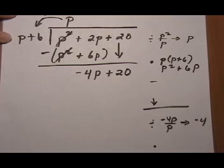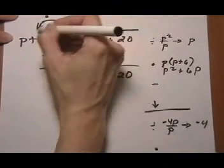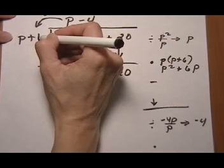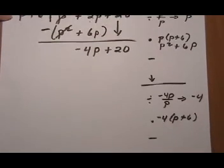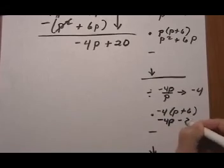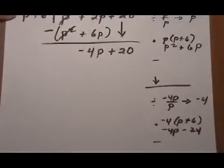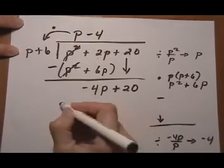So we take that minus 4, put it on top. And then we take the minus 4 and multiply it times p plus 6. So minus 4 times p plus 6 is minus 4p take away 24. We're going to take that result and subtract it right here.